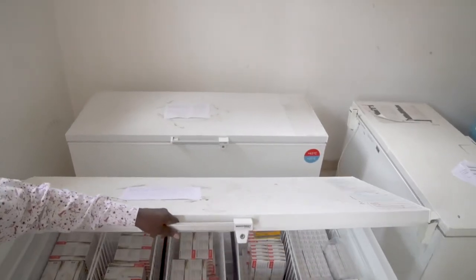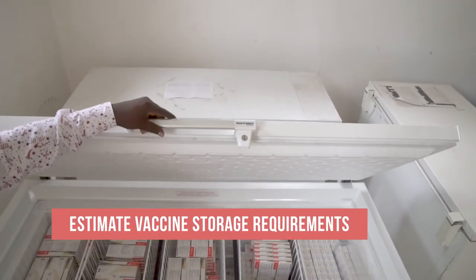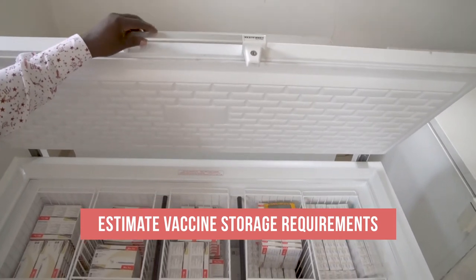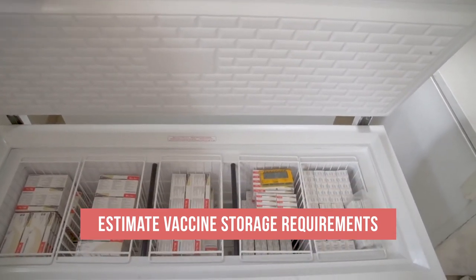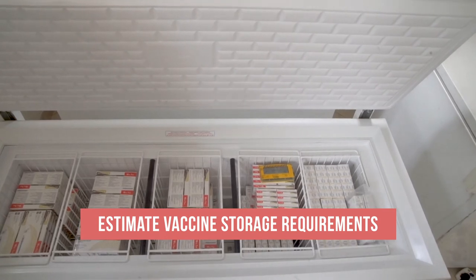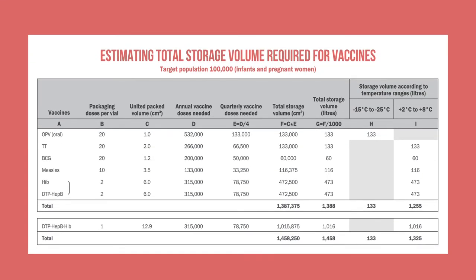Once you know your cold chain storage capacity, you will then estimate your vaccine storage requirements to determine if you have sufficient space. Using a table like this one, you would calculate the total storage volume for each type of vaccine according to temperature range, then add the volumes together to get the total vaccine storage volume required. This calculation is covered in more detail in a separate video.